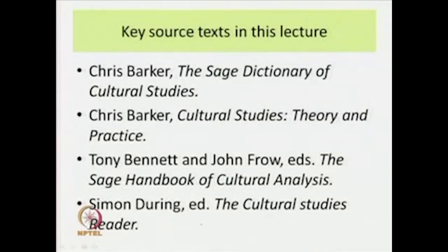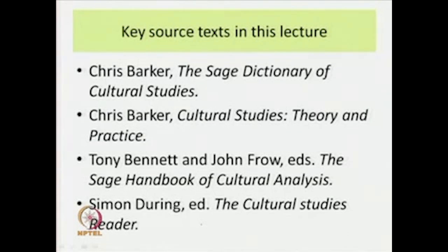The key source texts for this lecture are Chris Barker's 'The Sage Dictionary of Cultural Studies,' Chris Barker's 'Cultural Studies: Theory and Practice,' Tony Bennett and John Frow's edited book 'The Sage Handbook of Cultural Analysis,' and Simon During's edited volume 'The Cultural Studies Reader.' These are by no means the only books in this area, but most of the quotations and main formulations are drawn from them. These are one-hour lectures, and within that time frame I am trying to convey as many formulations and facets of each topic as possible.